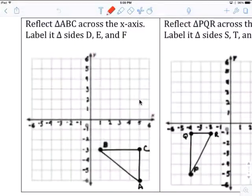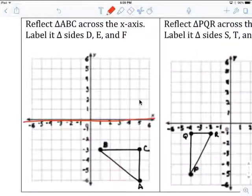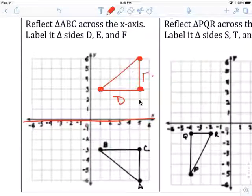Reflect triangle ABC across the x-axis. Here's the x-axis, reflect over it, label its sides D, E, F. Let's reflect over. C is three away, so we go three away, that's C. A is six, count six all the way up there, that's A. They want to label the sides D, E, F.